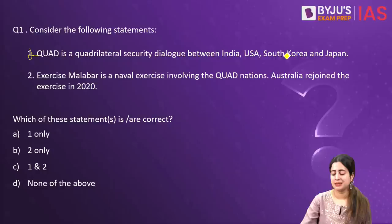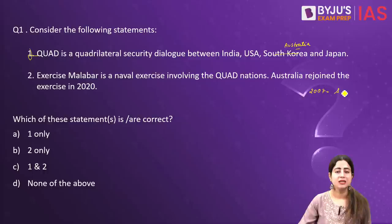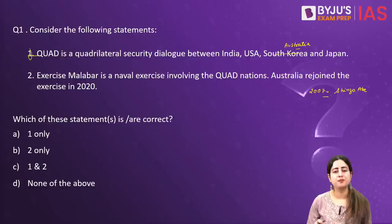In fact, it is Australia along with India, US and Japan — initiated back in 2007 on the recommendations of then Japanese Premier Shinzo Abe. The diplomatic partnership sought to create better regional cooperation, more stability, and development of the Indo-Pacific region. So the first statement is wrong.